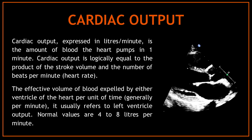Cardiac output, expressed in liters per minute, is the amount of blood the heart pumps in a minute. Cardiac output is equal to the product of the stroke volume and the number of beats per minute — the effective volume of blood expelled by either ventricle per unit of time, usually referring to the left ventricle output. Normal values are 4 to 8 liters per minute.